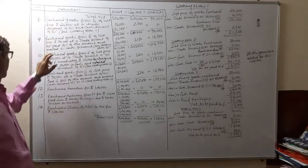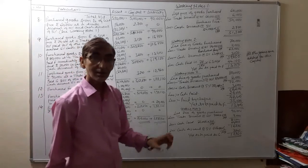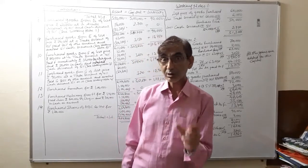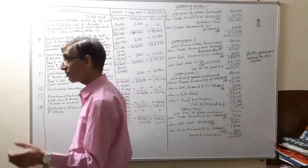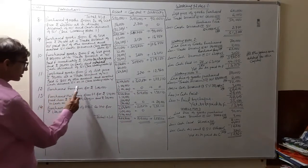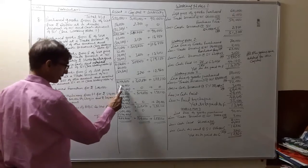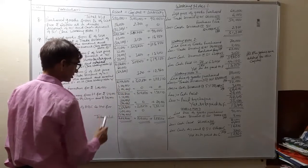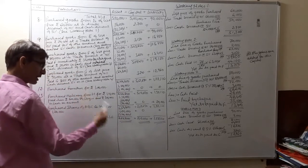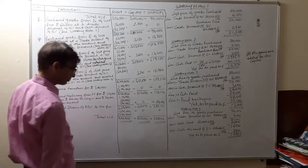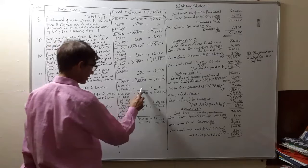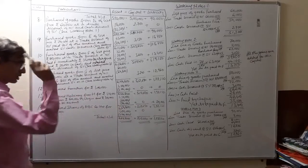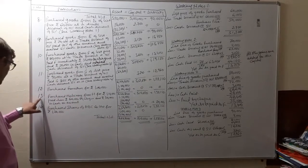Transactions 3 through 11 are related to purchase of goods. Now for transactions related to purchase of assets: Transaction 12 — purchase furniture for rupees 1 lakh. Furniture is an asset, so assets increase by 1 lakh. We paid the money, so 1 lakh is subtracted from assets. No effect on capital, no effect on liability; the equation is balanced.